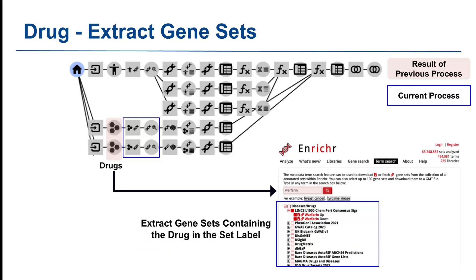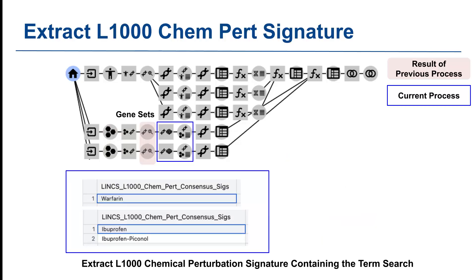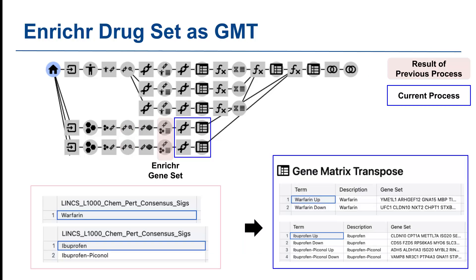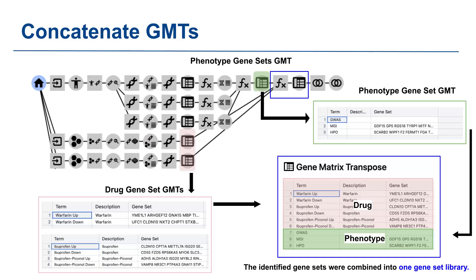Now let's look at how the Playbook processes the drugs. Once we have performed a term search on Enrichr using the drug inputs, we can extract the gene sets containing the input drug in the set label. Identified matching terms from the LINCS L1000 chemical perturbations consensus signature library are assembled into a collection of gene sets and then into a GMT file. This GMT file will contain the gene sets for both warfarin and ibuprofen, with a description and gene sets for each drug. After processing the phenotype and drug inputs, we combine them into a single gene set library in GMT format, offering insights into potential drug-drug interactions and other biological processes.